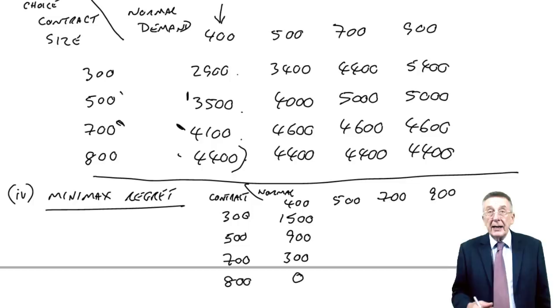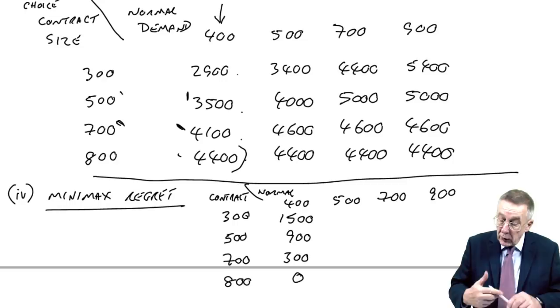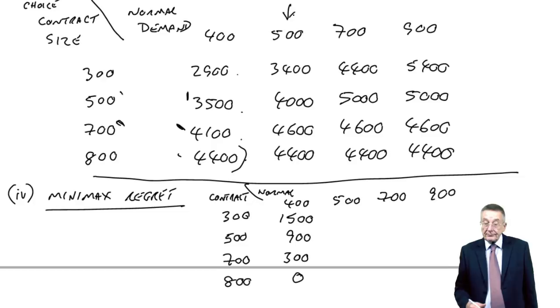Anyway, we're done with 400. So turn to the next level of uncertainty, which is 500. Again, forget the others, now just 500. Now, let's do the same sort of thing. If we'd known it was going to be 500, what would be the best choice? Well, the highest is 4,600, which comes from a contract size 700. So if we'd chosen 700, we've no regret.